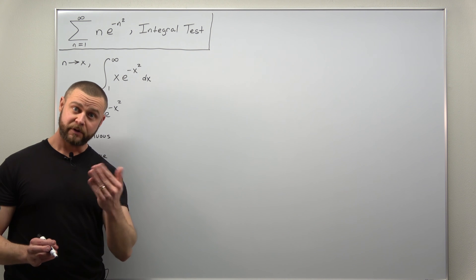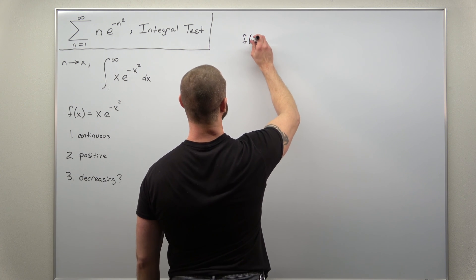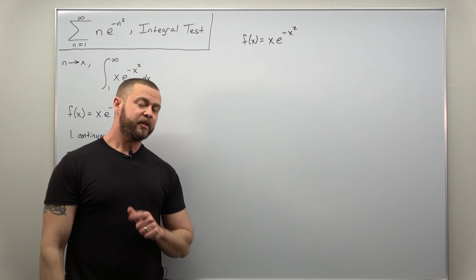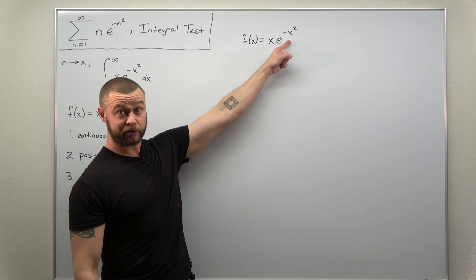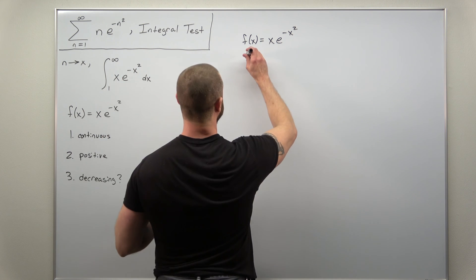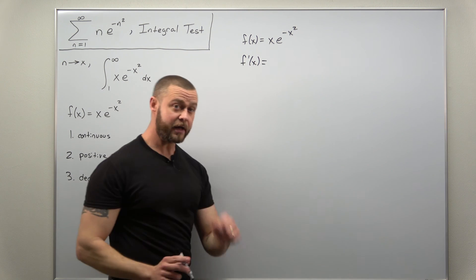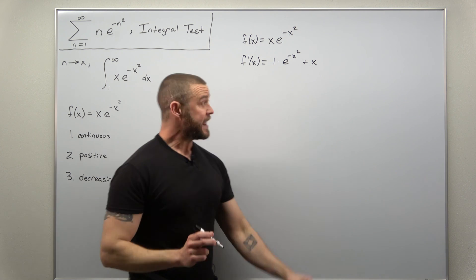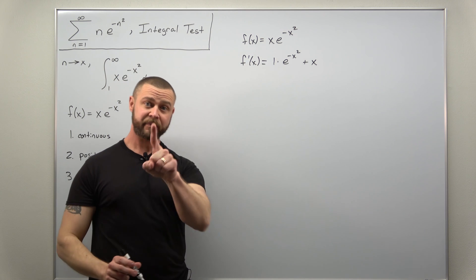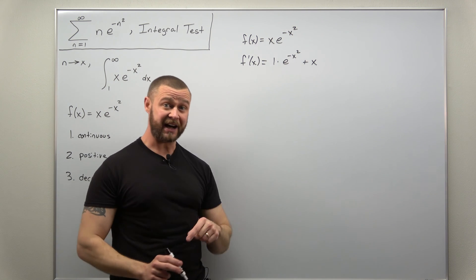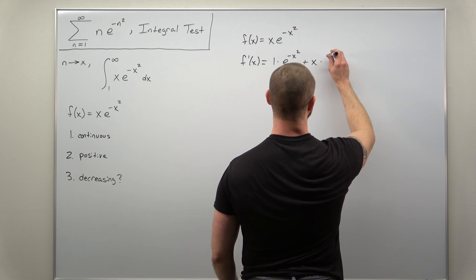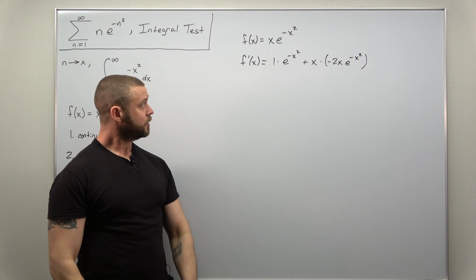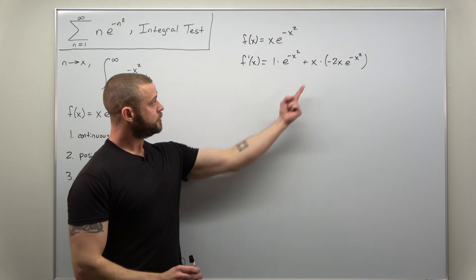Let's call this function f(x) = x times e to the negative x squared. We're going to calculate the first derivative using the product rule and the chain rule, since we have negative x squared inside the exponential function. Applying the product rule: differentiate the first function — the derivative of x is 1 — keep the second function the same, then keep the first function and differentiate the second, where the chain rule gives us the derivative of the inside, negative x squared, as negative 2x.